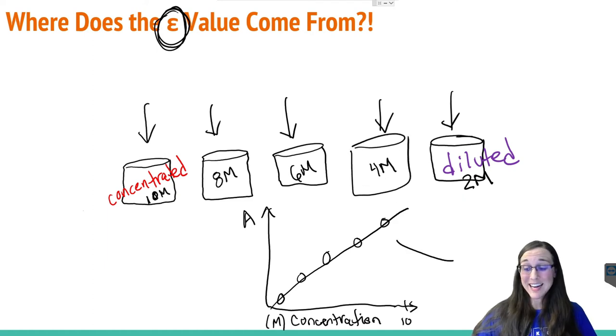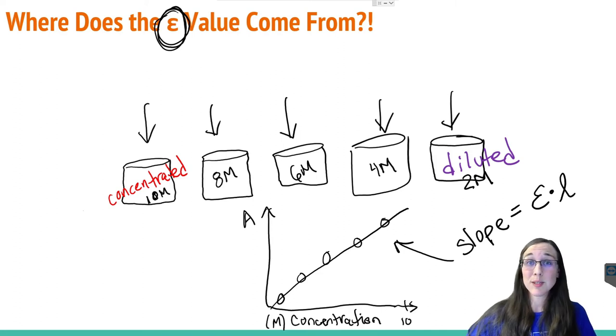What's great about this line now is that it's going to give me a slope. That numerical value for slope from our calibration plot is literally the extinction coefficient, the e-value times the length of the cuvette that your sample was placed in.